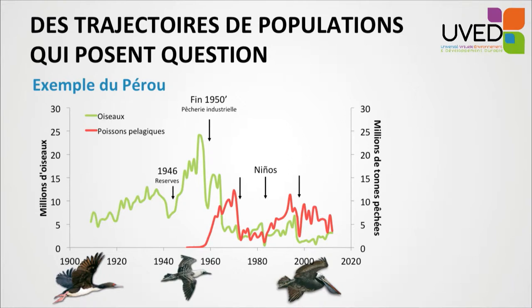Many elements explain variability in bird population, sometimes administrative. In 1946, the Peru state created natural reserves to protect areas where birds make their nests, and the population doubled. In the late 50s, an industrial fishery developed which fishes the main prey, Peruvian anchovies. Also, climate events such as El Niño had an impact on abundance, distribution, and accessibility of anchovies for the birds. It is extremely difficult to discriminate the respective influence of fishery, administrative, or climatic factors.